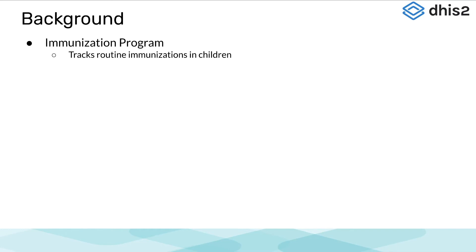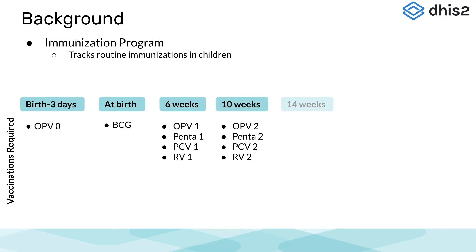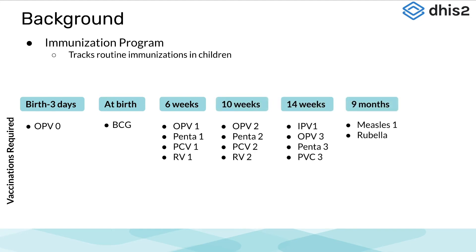The Tracker program we will be looking at in this demonstration is the Immunization program. This program captures information on routine immunizations in children. At birth, 6 weeks, 10 weeks, 14 weeks, 9 months, and 18 months of age, children should receive specific vaccinations. Any time they receive a vaccination, we would want to record that they have received that particular dose and the date they received it. The Tracker Capture app allows us to capture this information.